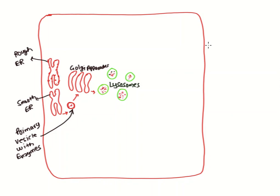Now let's look at how the lysosomes function. The three pathways are mainly phagocytosis, endocytosis, and autophagy. We will start with phagocytosis. Phagocytosis basically occurs with foreign particles like microorganisms or bacteria. They are engulfed within the plasma membrane indent. Once they are engulfed, it forms the phagosome.